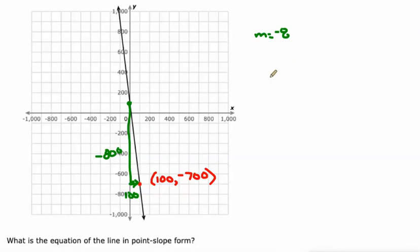So our equation, let's go y, instead of minus negative 700, let's just make it plus 700 right now equals negative 8 times x minus 100.